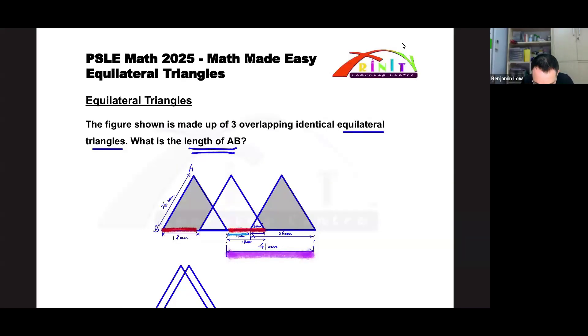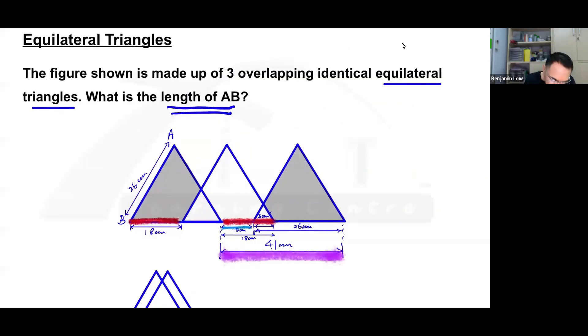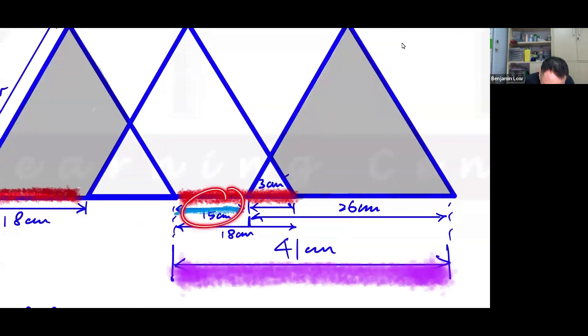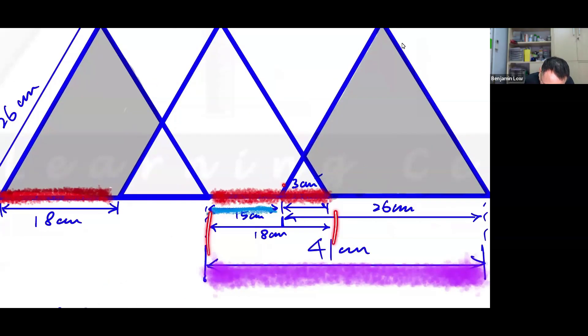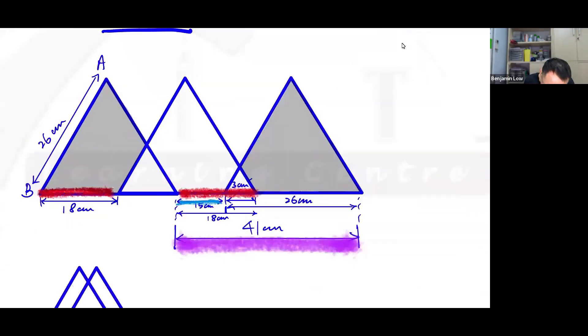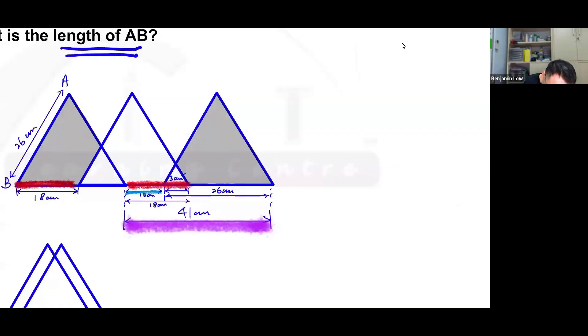So right now, I'm going to write out the steps that we have talked about to get the answer for AB. And the steps will start with the writing of this 18 centimeters, and this also being 18. And since this is 3, I will be able to find the 15 over here, because this is 18 and this is 3. So if I take this minus this, I should get the 15 over here. That's the first thing I'm going to write. It will be 18 cm minus 3, which is given, to get 15 centimeters.